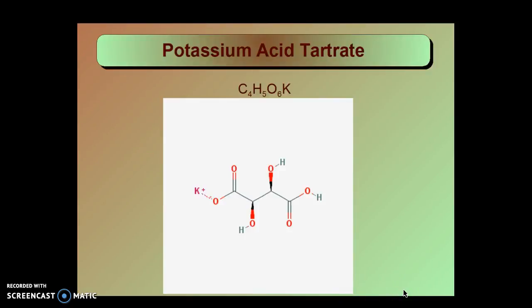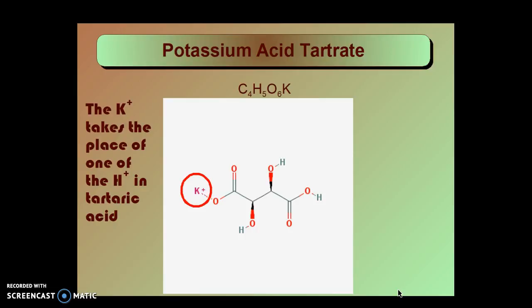This is the structural formula for potassium acid tartrate. You will see that potassium on one end takes the place of one of the hydrogen ions in tartaric acid. Tartaric acid has two hydrogen ions that can be reacted.